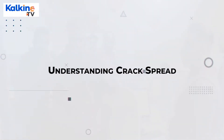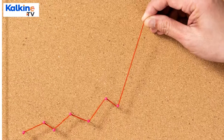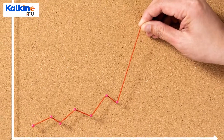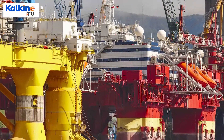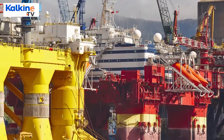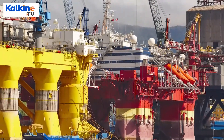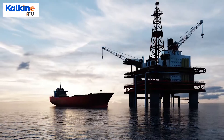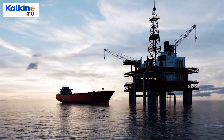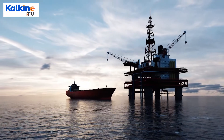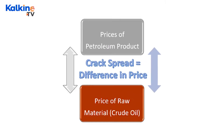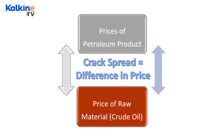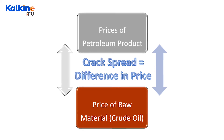When it comes to understanding crack spread, in the petroleum industry the refiner's profit is mainly linked with the spread or with the margin between crude oil prices and the prices of refined products. Crude oil is used as a raw material for the production of refined petrochemical products which are sold to users. The process of conversion of raw material to user-centric petroleum products is commonly referred to as cracking, and that's why the hedge between the input cost and output prices is called crack spread.